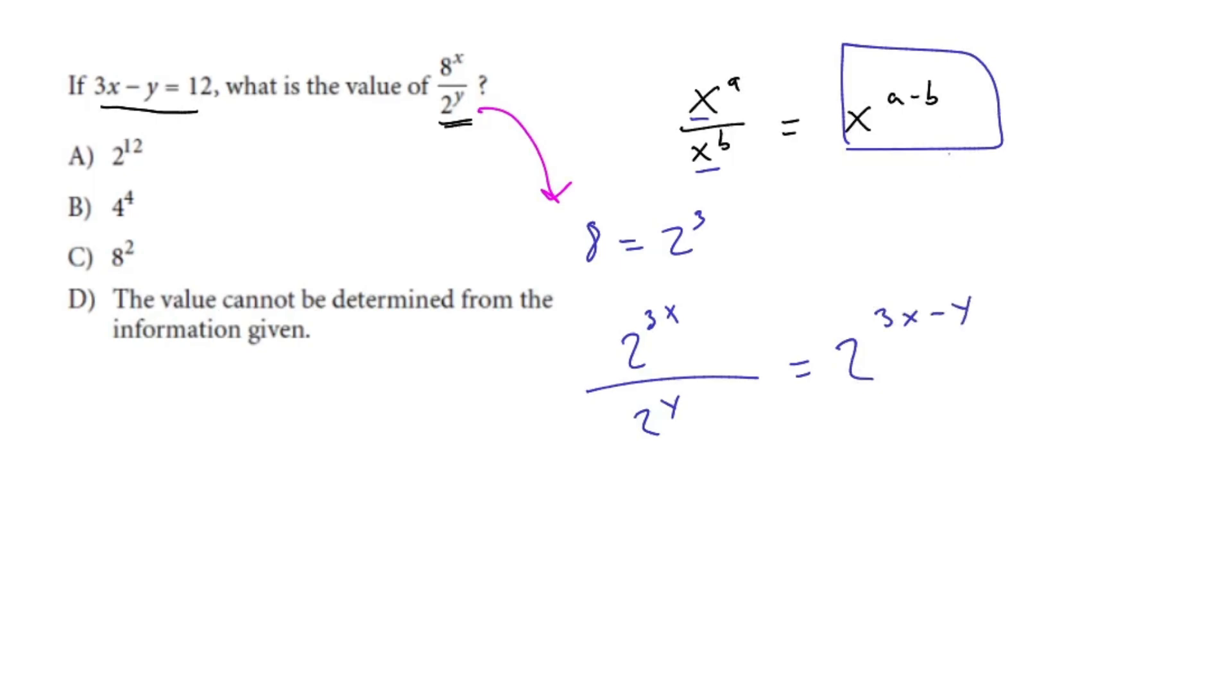Now something really cool happens here. It's 2 to the power of 3x minus y. It gives us a statement: 3x minus y is equal to 12. So what would it be? It would be equal to 2 to the power of 12. Because in our statement, it says it's equal to 12. So we plug this 12 right back in, and we get our answer of 2 to the power of 12.